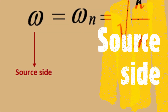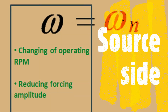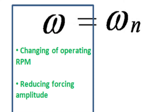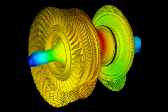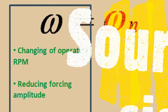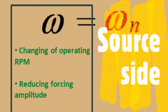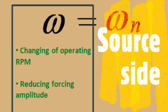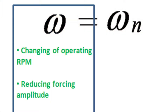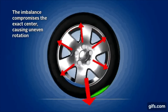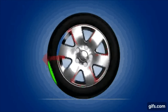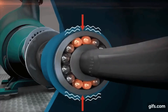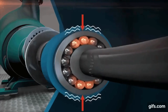If one has decided to work on the source side, there are two options available: changing the operating RPM or reducing the force and amplitude. Reducing the force and amplitude also reduces the response and resonance. This can be achieved in practice by proper balancing of rotating parts or correcting misalignments, etc.